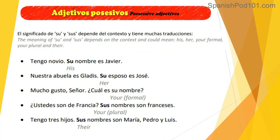The meaning of 'su' and 'sus' depends on context and could mean his, her, your (formal register), your (plural), or their. Let's look at some examples. 'Tengo novio. Su nombre es Javier.' Context helps us understand what 'su' means. Since we said 'I have a boyfriend,' we know 'su nombre' refers to his name — his name is Javier.